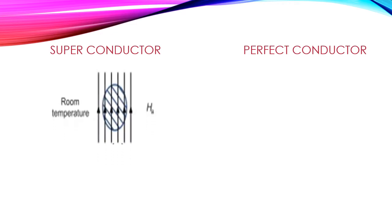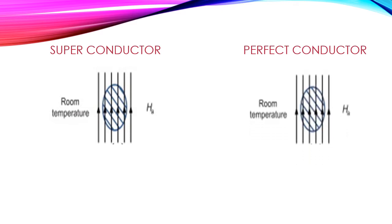When a superconductor is placed in an external magnetic field under room temperature, we would notice the field lines passing through the material. A similar situation can be observed in case of a perfect conductor. It must be noticed that both situations take place at room temperature.